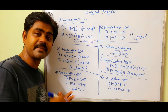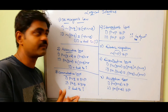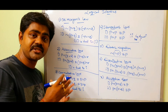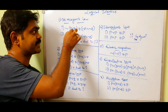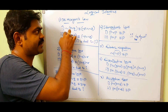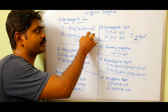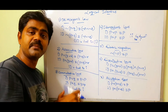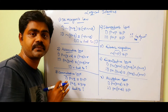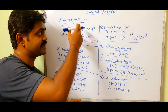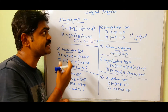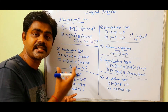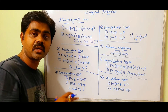In my next video we will solve De Morgan's law — for example, negation of P OR Q equals negation P AND negation Q — and we will check both truth tables. This is all about logical identities and duality law, also called the dual principle, and whether the identities follow dual laws or not.